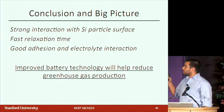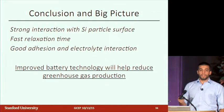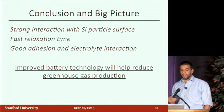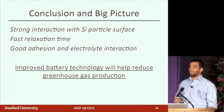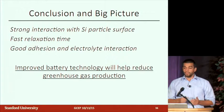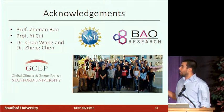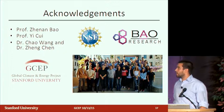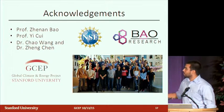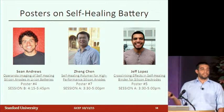In conclusion, strong interaction with the silicon surface via hydrogen bonding is important, as is a fast relaxation time for effective healing, and good adhesion and electrolyte interaction. Improving battery technology can help reduce greenhouse gas production in the US and around the world. Thanks to my advisor Zhenan Bao, Professor Yi Cui, postdocs Chao and Jung, GSEP and NSF for funding, and the whole Bao group. If you're interested in hearing more, there are three posters from our group on this project right after this session.